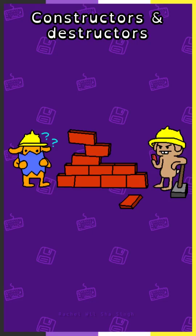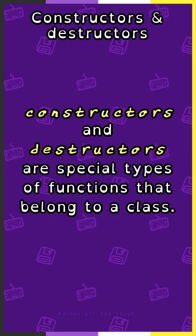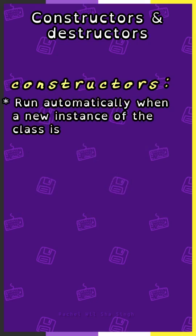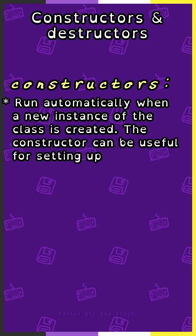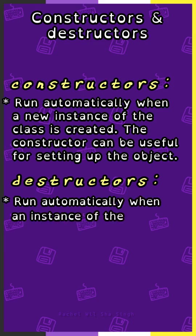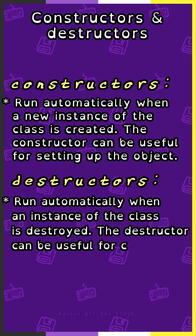Constructors and destructors are special types of functions that belong to a class. The constructor will be run automatically when a new instance of the class is created, and can be useful for setting up the object. Destructors are run automatically when the instance of the class is destroyed, and can be useful for cleanup.